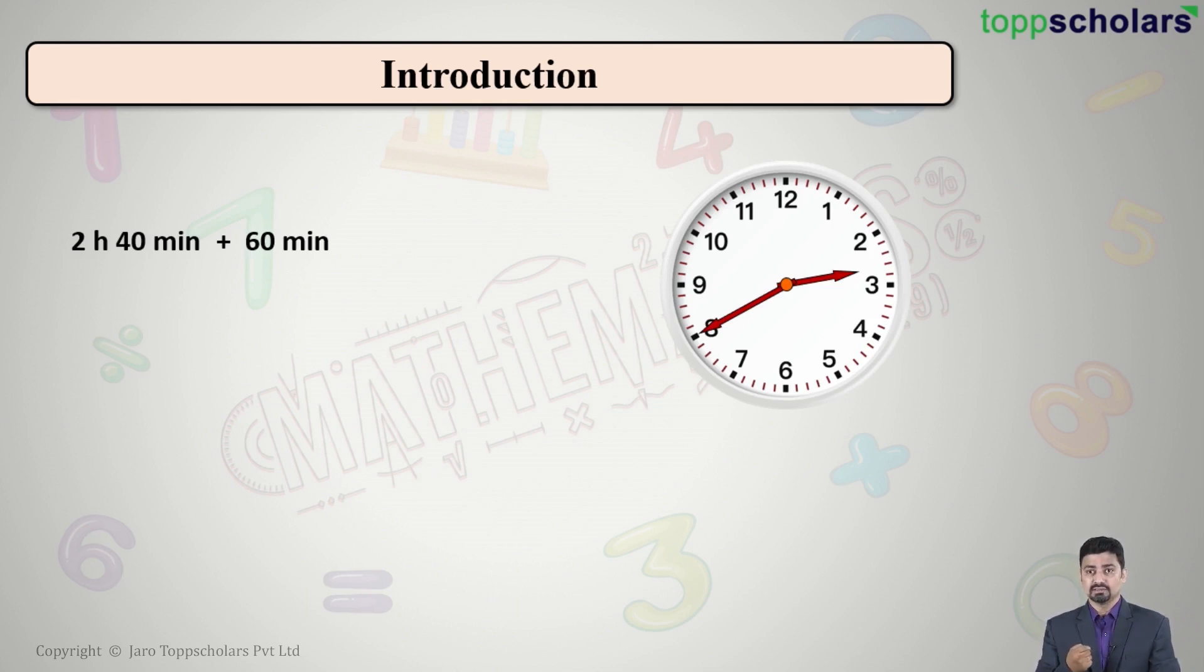Now it is simple to add minutes to minutes. So if we observe, we have written 2 hour 40 minutes plus 60 minutes. So let us add the minutes. It will be 40 plus 60. We have just done the addition. What is 40 plus 60, my dear students? Yes, it is 100 minutes.